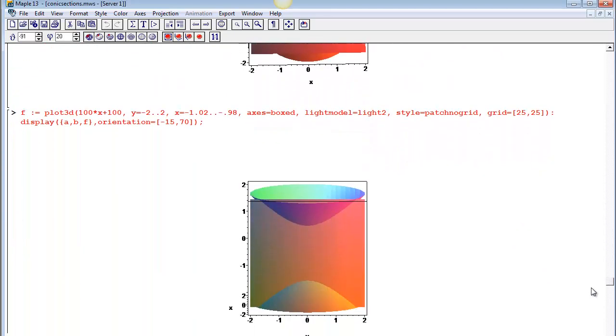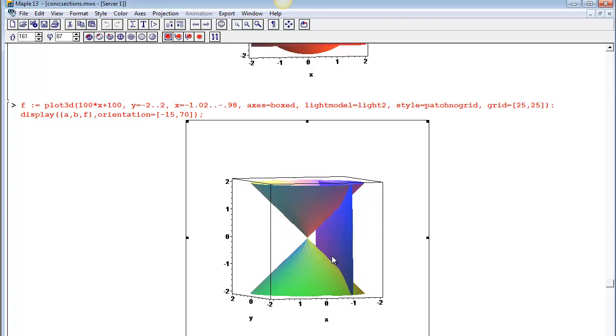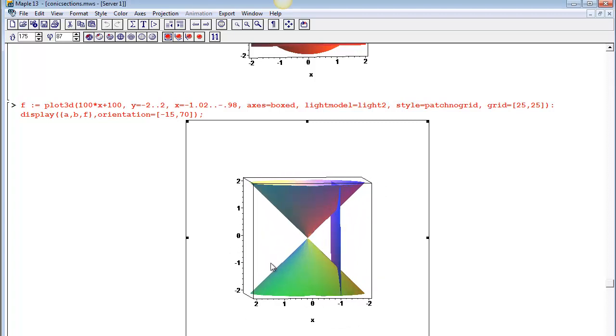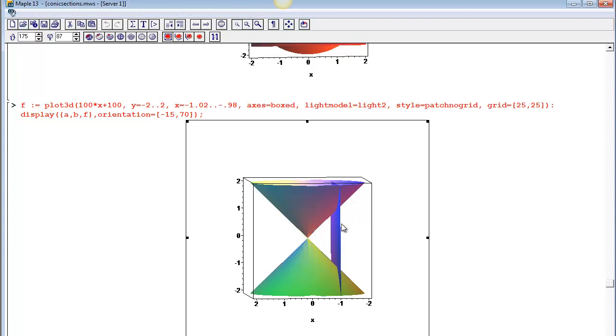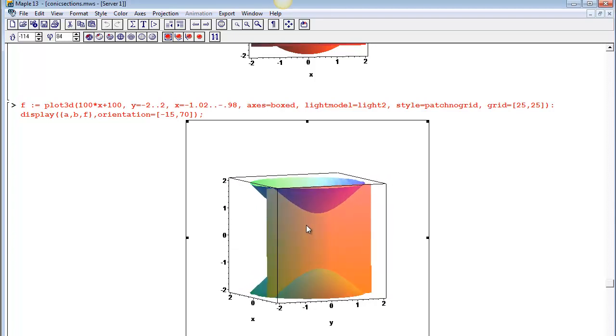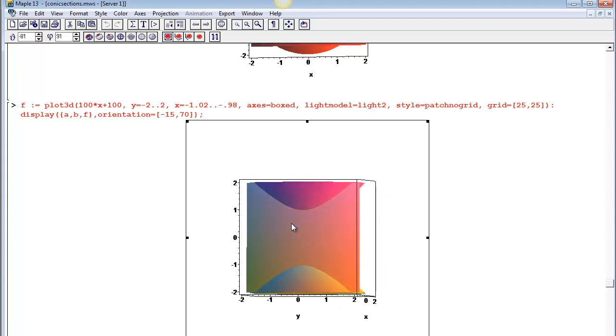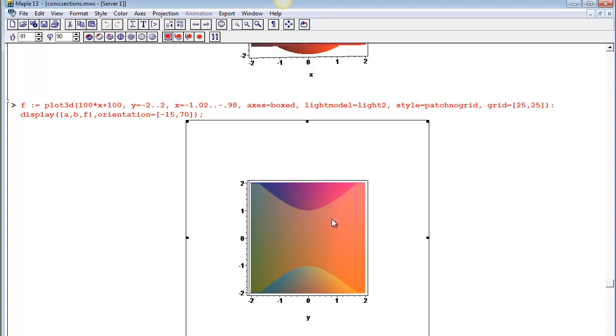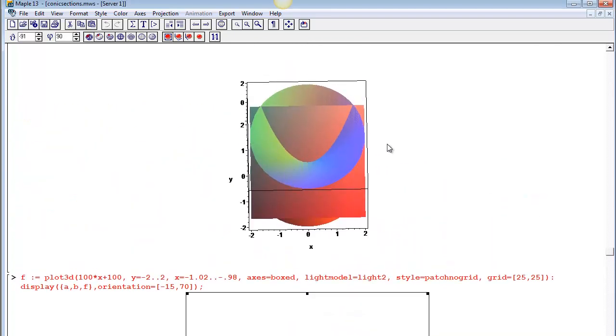If we cut it even steeper, steeper than the sides of the cone, then it's going to have to cut through both the upper and the lower part. This creates a shape that's different from the parabola - it has two branches. Unlike the parabola, which keeps getting steeper and steeper as you go out,